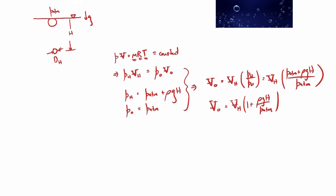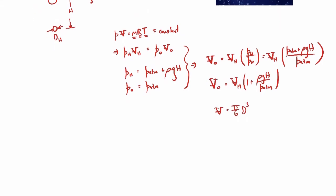And if we assume that the bubble remains a sphere the whole time, then the volume will just be pi over 6 times the diameter of the sphere cubed. So we can substitute that expression in for the volume and what we'll end up with is the following.